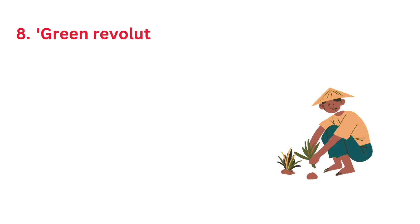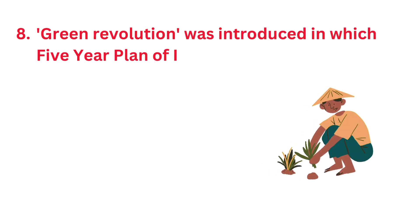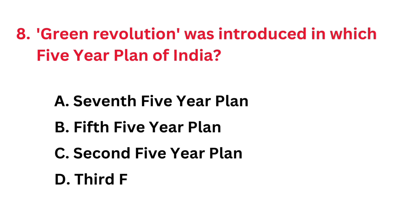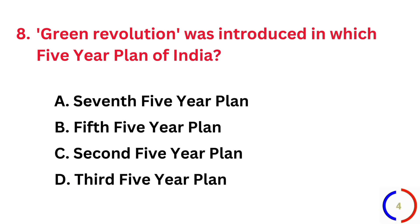Green Revolution was introduced in which five-year plan of India? The correct answer is option D: third five-year plan.